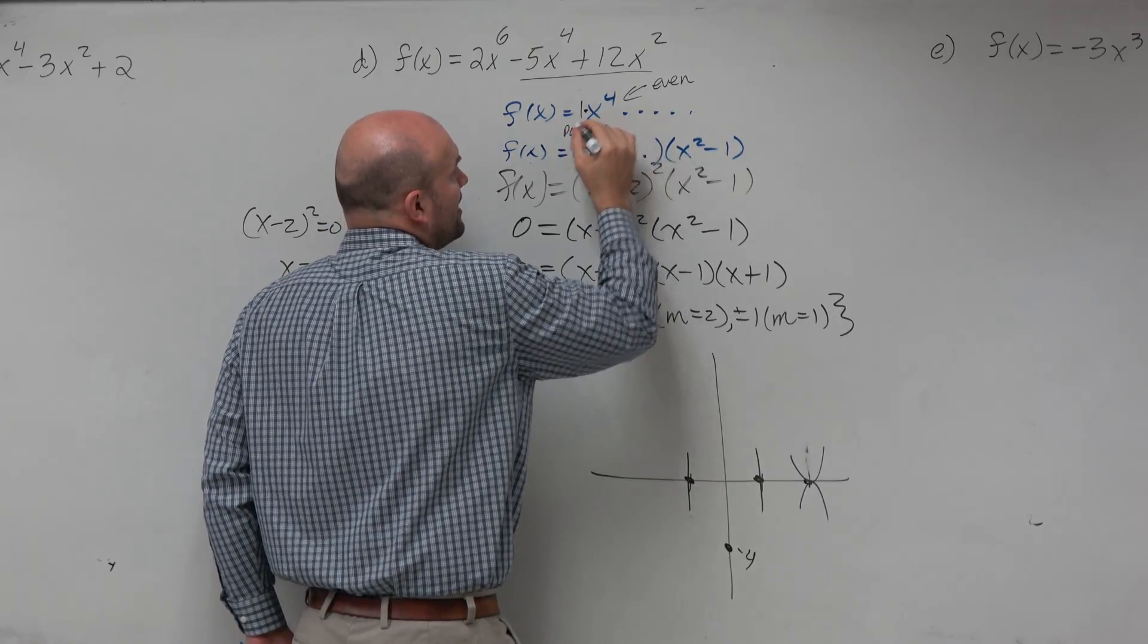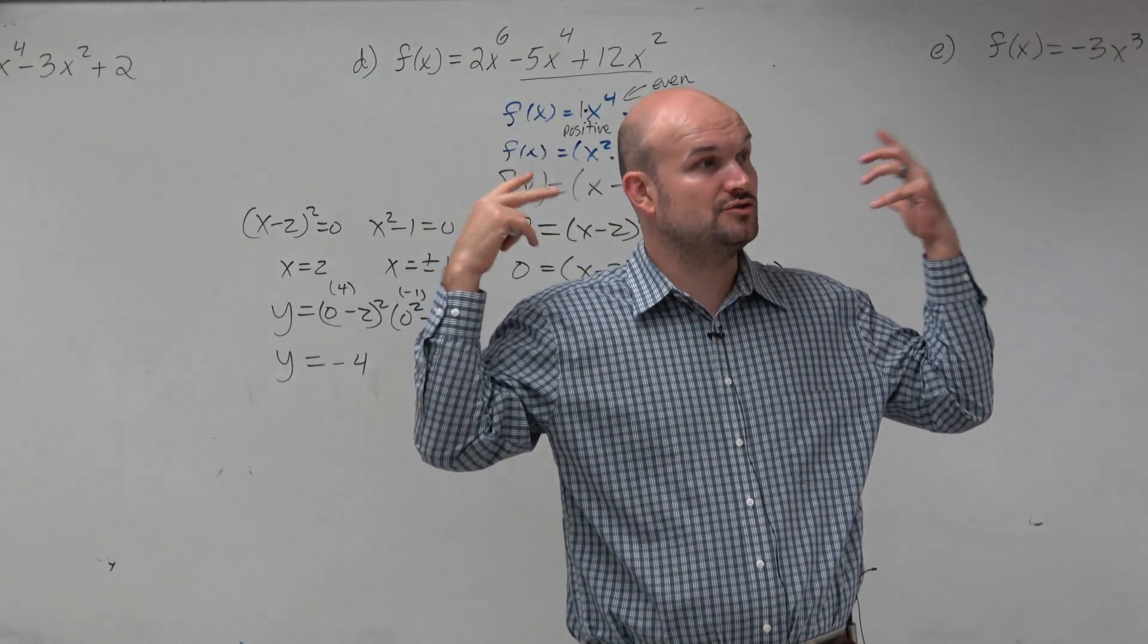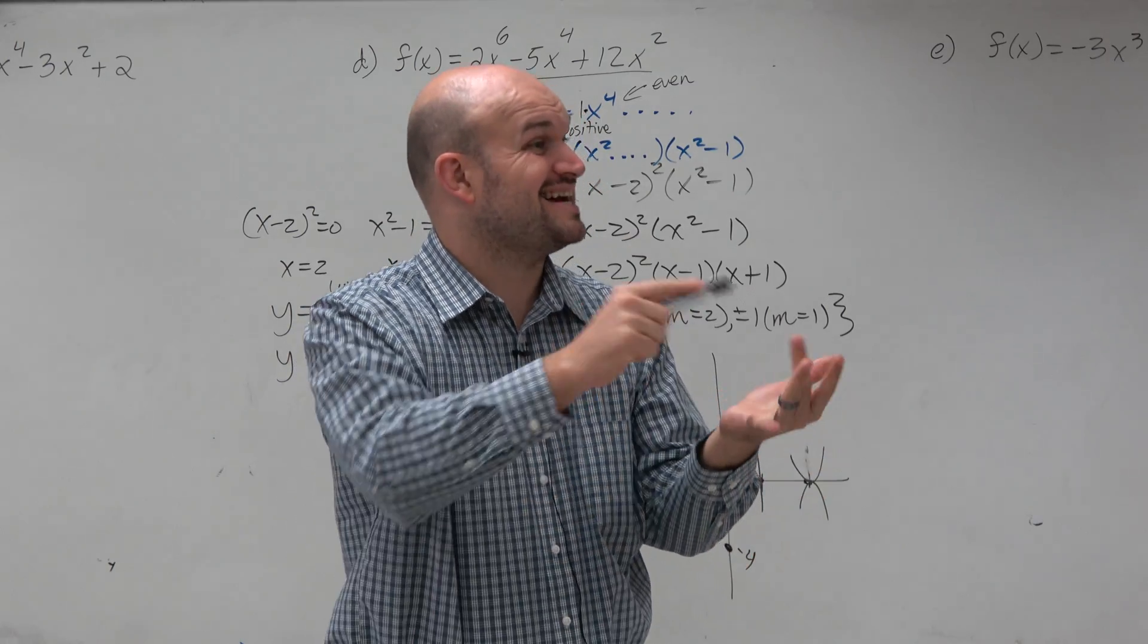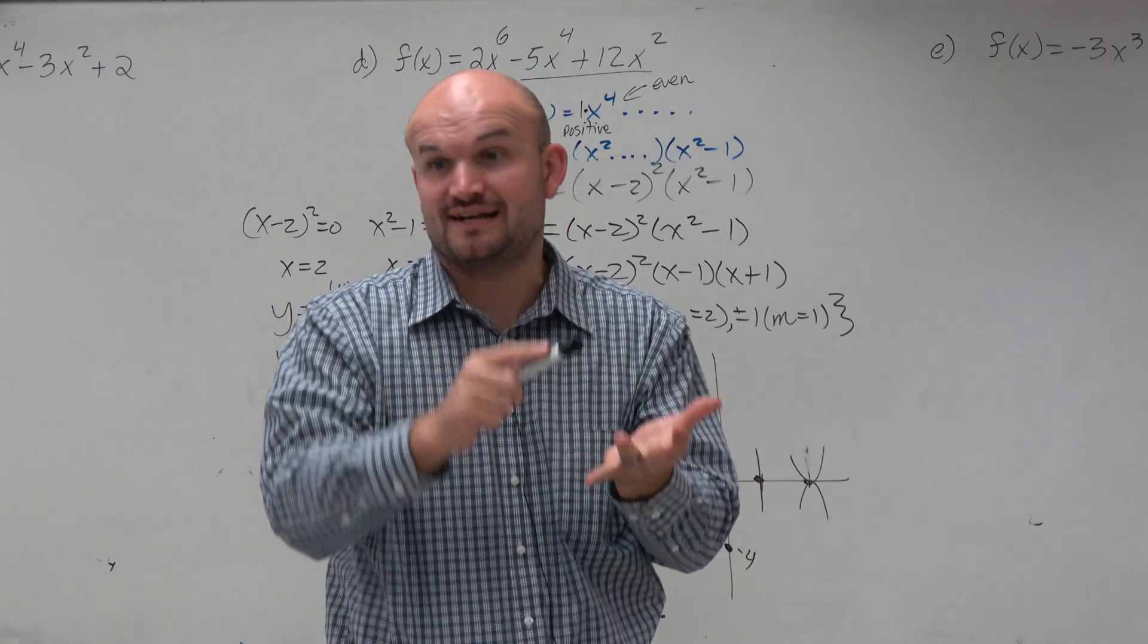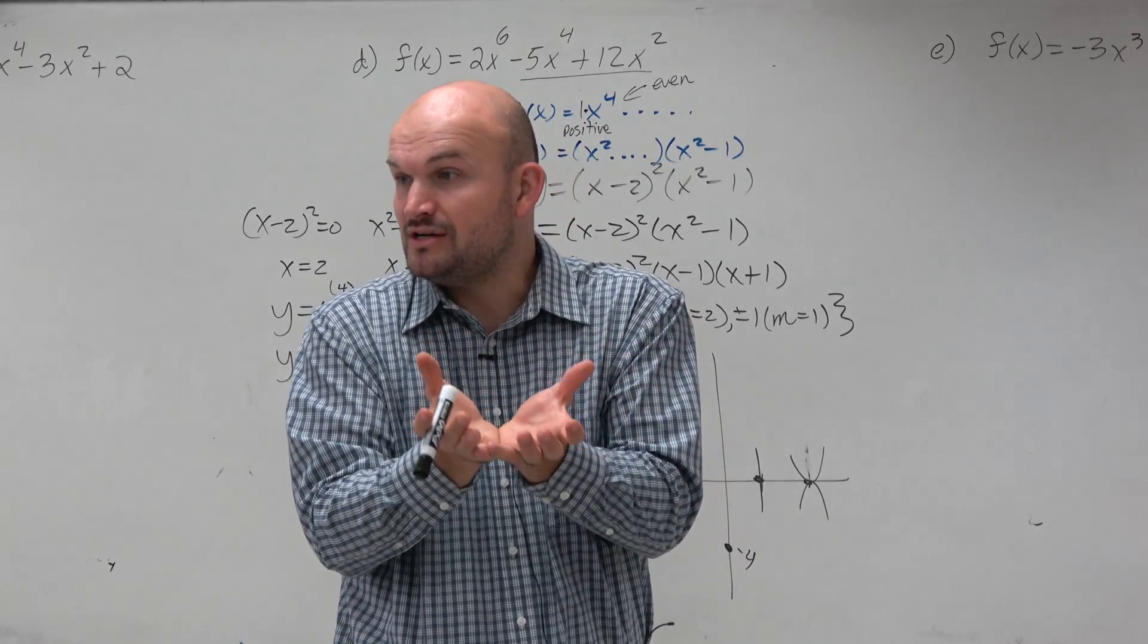So now I look at this and I say, oh, x to the fourth is even. My leading coefficient is positive. So then I think, all right, what do I know about something that is even and positive? And my mind automatically goes to a quadratic. Because quadratic is x squared. Because x squared, x to the fourth, x to the sixth, x to the eighth, x to the tenth, x to the twelfth, x to the fourteenth. I think you get the idea. Anything that is even, has an even power, is going to behave like a quadratic.